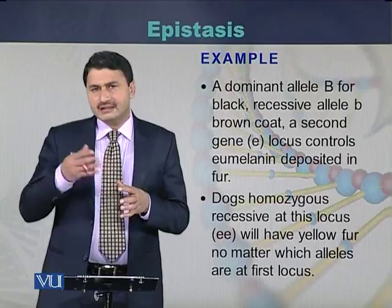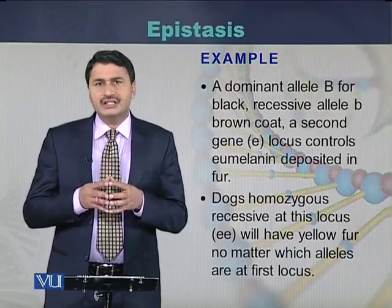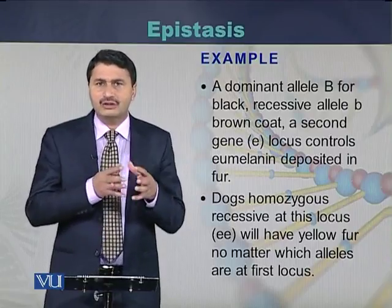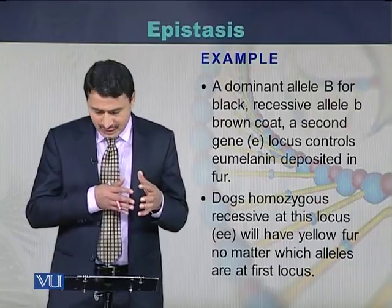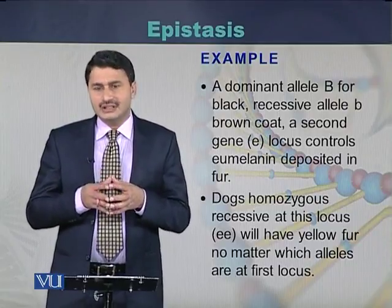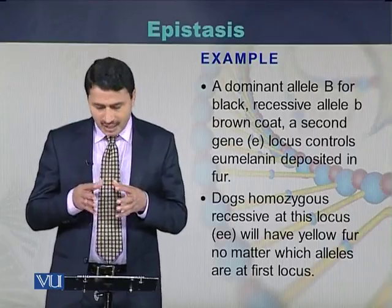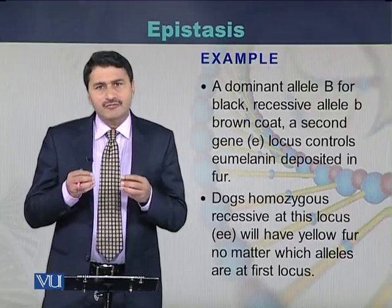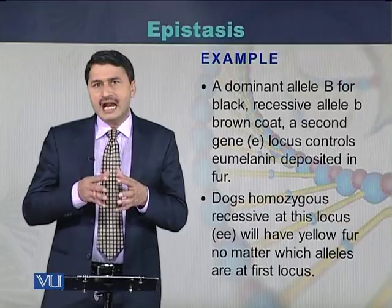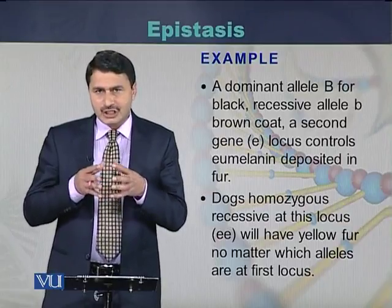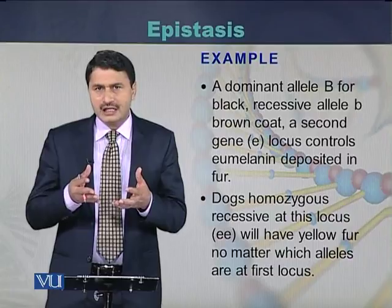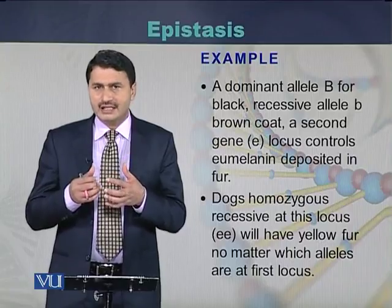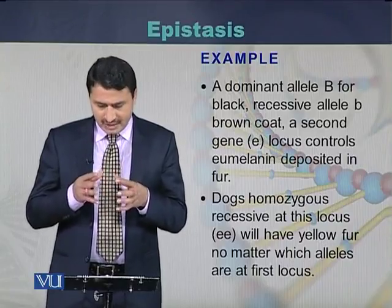There is a second gene, and if that gene is in homozygous form, it has an effect on the expression of the first gene. If the second gene is in homozygous form, then the coat color of the dogs will be yellow — whatever the allele at gene number one is, whether dominant or recessive, if the second gene is homozygous, the color of the dogs will be yellow.